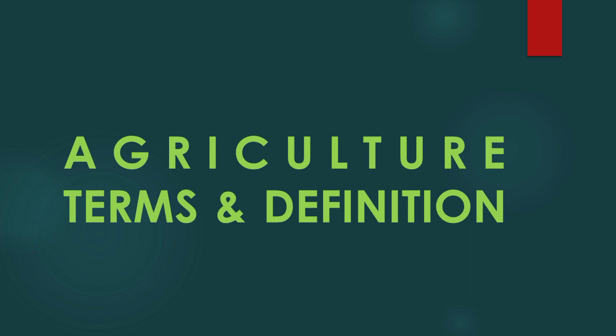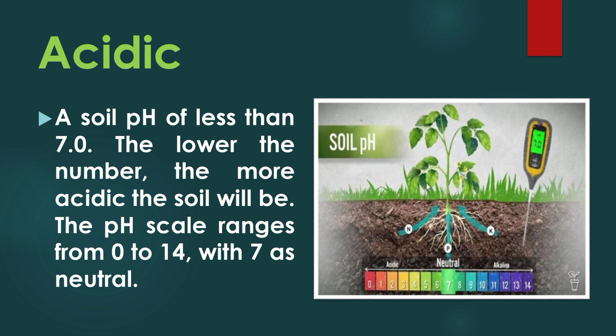Agriculture terms and definitions. Acidic: a soil pH of less than 7.0. The lower the number, the more acidic the soil will be. The pH scale ranges from 0 to 14, with 7 as neutral.